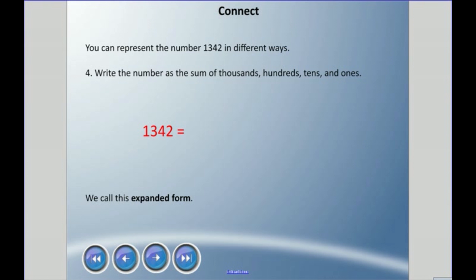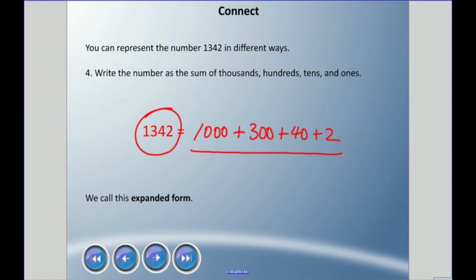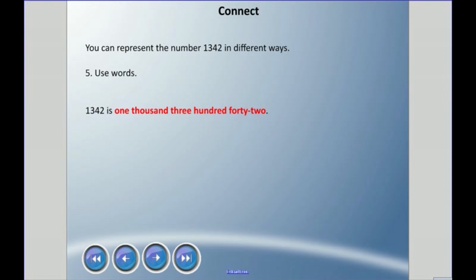Building on that, we can use expanded form — writing this out as a sum. A sum is the answer when we add numbers together, so if I add 1000 plus 300 plus 40 plus 2, I get 1342. We call this expanded form, and we'll use that language throughout this unit. When a teacher or I ask you to write something in expanded form, we're asking you to write it out this way.